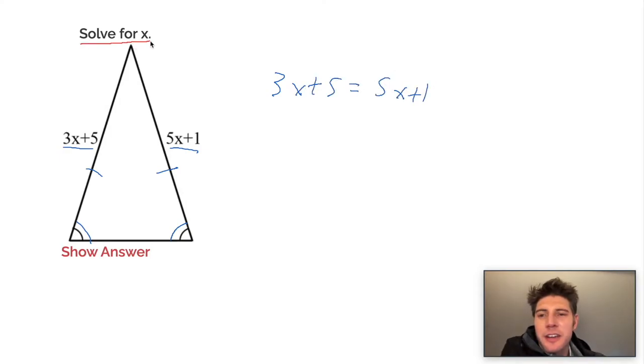It says solve for x, so our goal is to get x by itself. When we're done, it should look something like x equals something, a number. But right now we have an x on both sides of the equation. We can't have that. So we're going to move one to the other side. I like to find the smaller of the two and the 3x is smaller than 5x.